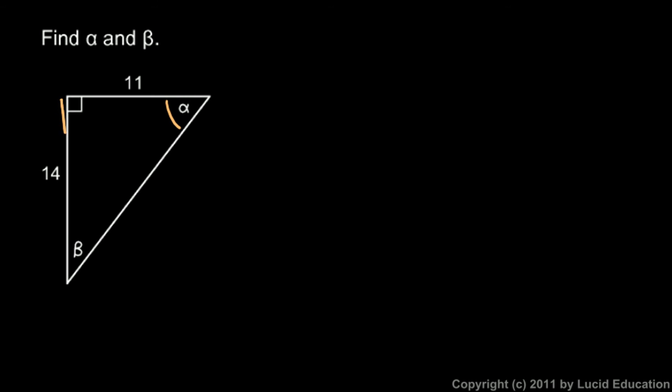And look what we know. Here's angle alpha. I know the side opposite alpha is 14, and I know the side adjacent to alpha is 11. And when I have opposite and adjacent, what comes to mind is the tangent function. The tangent of alpha is the opposite, that's 14 over the adjacent, which is 11. So the tangent of alpha is 14 over 11. So alpha is the inverse tangent of 14 over 11. And on the calculator, that comes out to 52 degrees.